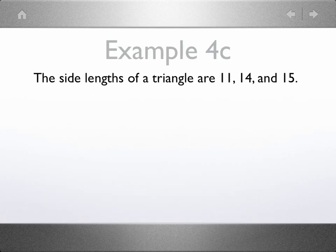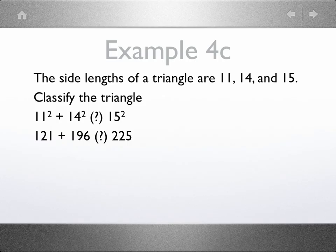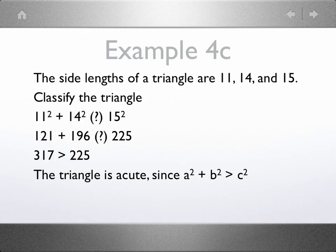Here we have side lengths of 11, 14, and 15, and we're asked to classify the triangle. Same thing. Let's compare a squared plus b squared to c squared. Let's square those numbers. Let's combine the left side. And here, 317 is greater than 225. So therefore, this triangle is acute.